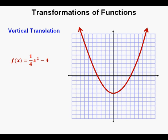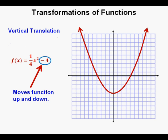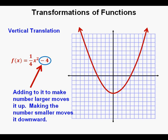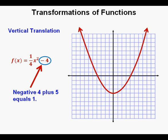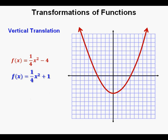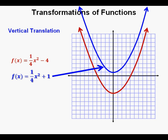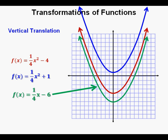Now we'll examine the vertical translation, using the same function f of x equals 1 fourth x squared minus 4. The vertical translation moves the function or graph up and down on the coordinate plane. It's the constant term — the number by itself at the end — that decides how the function moves up or down. That constant is the y-intercept. If we add 5, negative 4 plus 5 equals 1, giving f of x equals 1 fourth x squared plus 1, translated 5 units upward. Making the y-intercept negative 6 shifts the graph down 2 units from the original, shown in green.